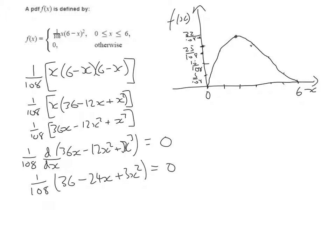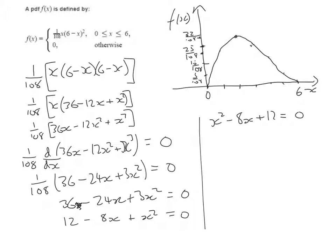I'm going to multiply through by 108, which gives us 36 - 24x + 3x² = 0. All three terms have 3 as a factor, so I'll divide through by 3. We get 12 - 8x + x² = 0. I'll rewrite that in the more conventional form.